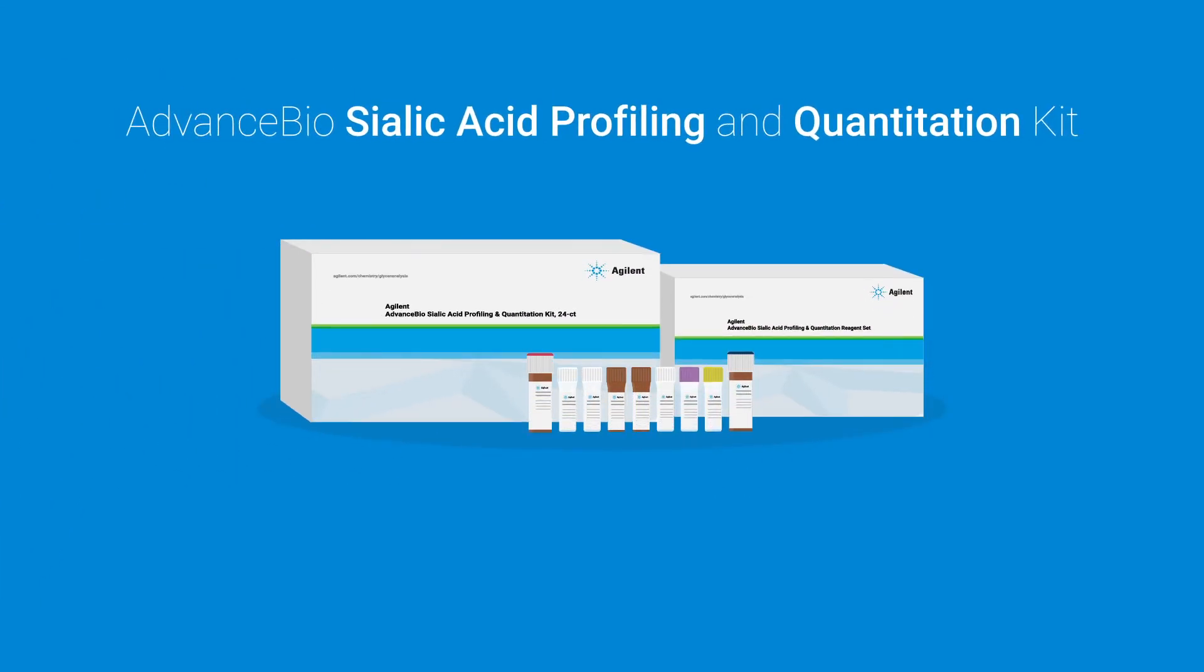The Agilent Advanced Bio Sialic Acid Profiling and Quantitation Kit, a sensitive, high throughput approach to profiling and quantitation.